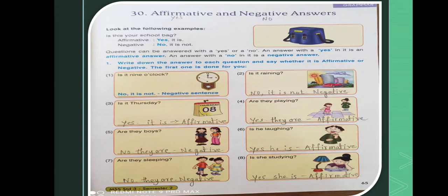So these are the affirmative and negative sentences, negative answers. Here affirmative means we have to add yes and negative means no. Yes means affirmative answers and no means negative answers.